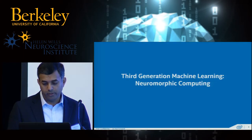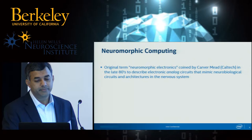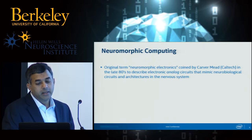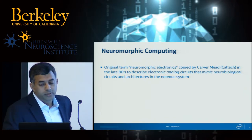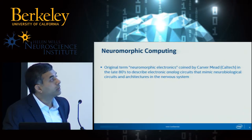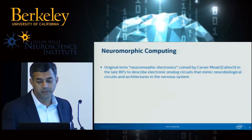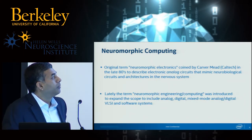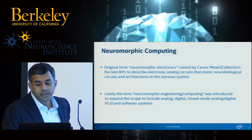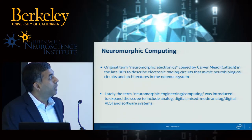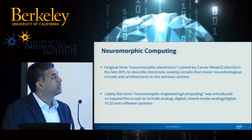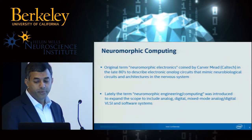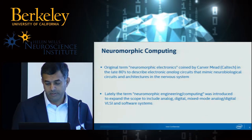Now let's look at what I call the third generation. The term neuromorphic computing was originally coined by Carver Mead at Caltech in the late 80s to describe analog circuits that mimic neurobiological architectures in the nervous system. That term later got morphed into neuromorphic engineering and computing, expanding scope from just analog circuits to also include digital mixed-mode, analog-digital VLSI, and software systems.